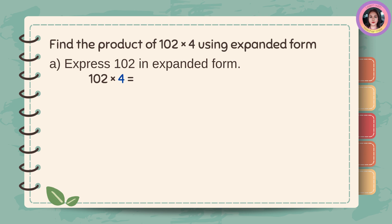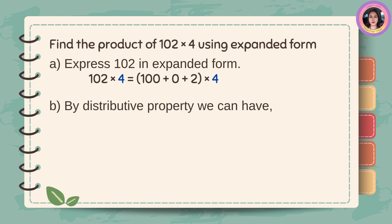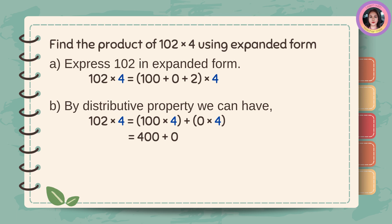Express 102 in expanded form. 102 times 4 is equal to 100 plus 0 plus 2 times 4. By distributive property, we can have 100 times 4, plus 0 times 4 is equal to 0, plus 2 times 4 is equal to 8. Then, 400 plus 0 plus 8 is equal to 408.